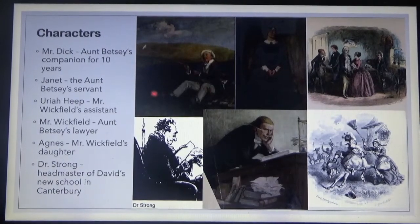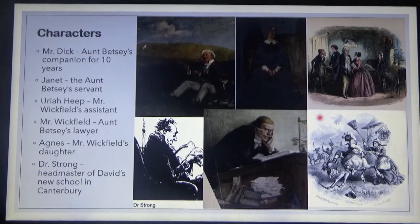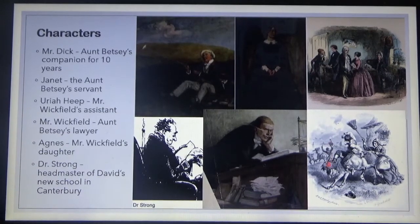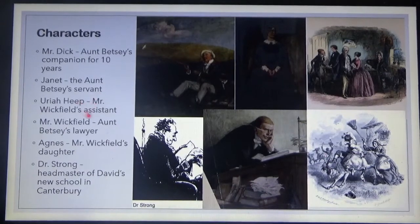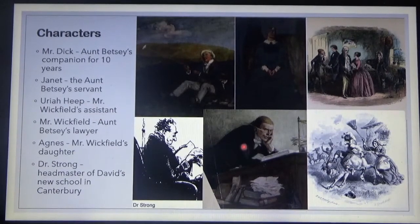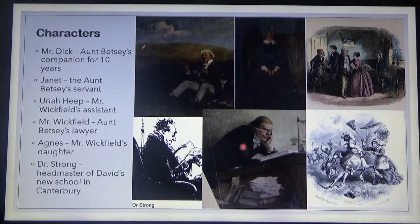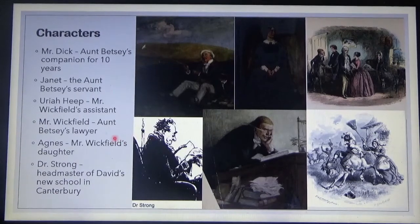We have Janet, Aunt Betsy's servant. We have Uriah Heep, Mr. Wickfield's assistant. This is Uriah Heep. He's described as the person with an oily smile. And Mr. Wickfield is Aunt Betsy's lawyer.